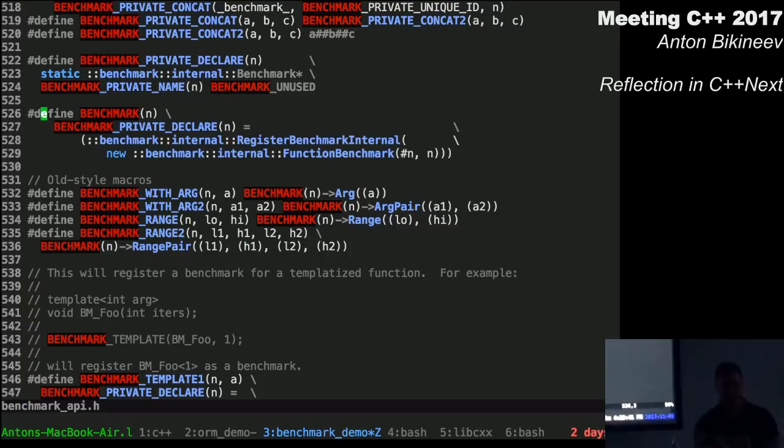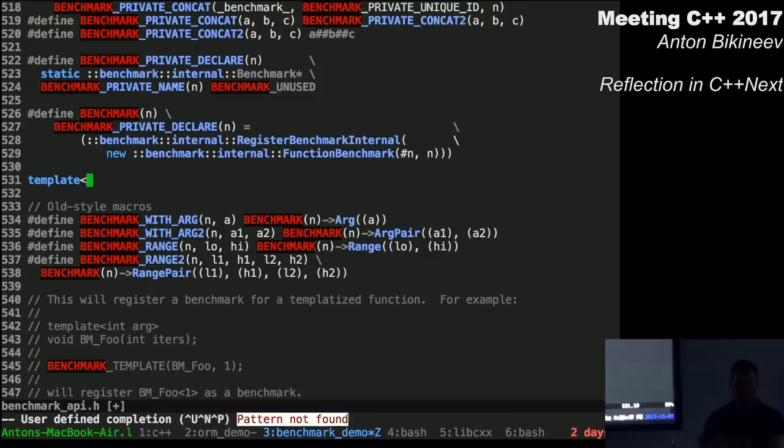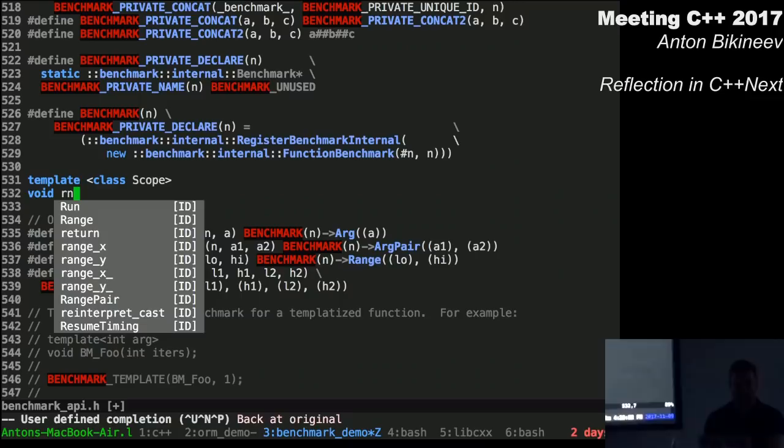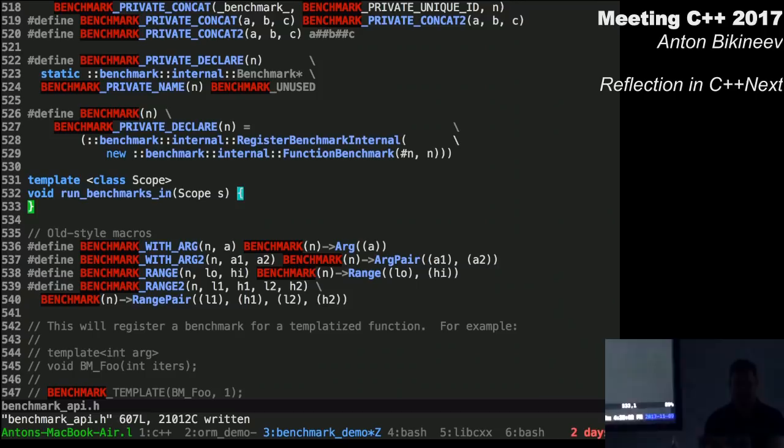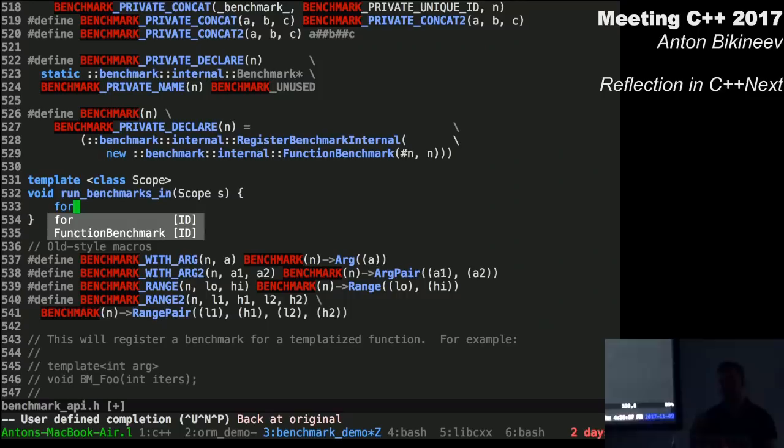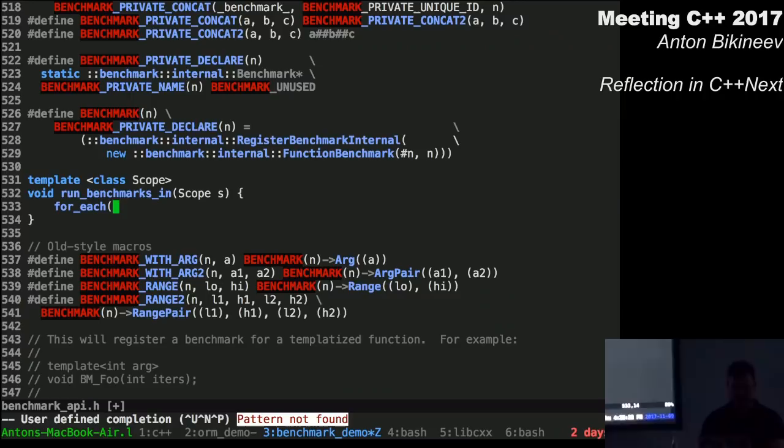So I just marked this function with the attribute benchmark. And let's see what this macro benchmark essentially does. For that, let's go to the sources of the library. Here it is. So what it does, it essentially creates a static variable which does some registration. So let's create a function here that will take a meta object corresponding to some scope.